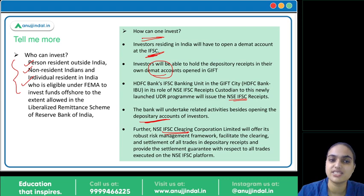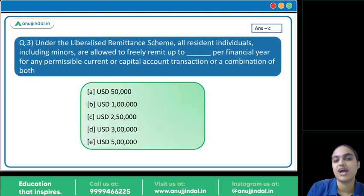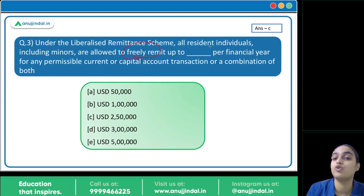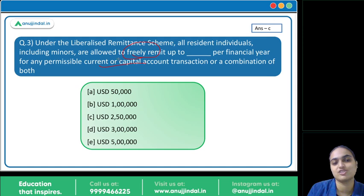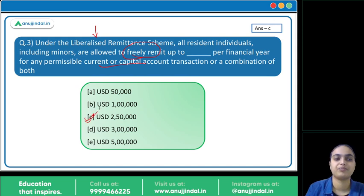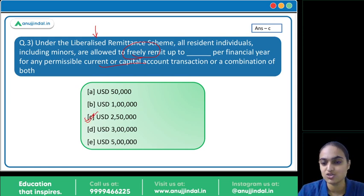The third question, related to the Liberalized Remittance Scheme, asks: under LRS, all resident individuals including minors are allowed to freely remit up to how much per year for current and capital account transactions? As we just discussed, the answer is 2,50,000 US dollars.